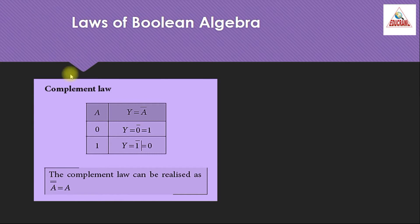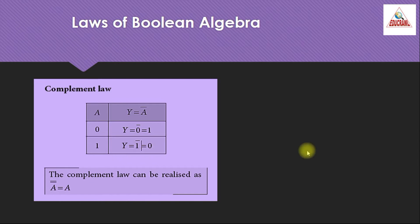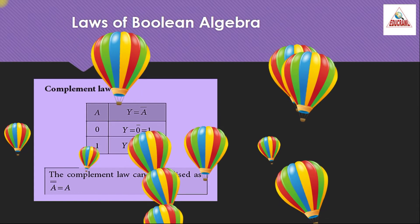First let us see about complement law. Complement law is given by y = ā, which is the complement of a. When a = 0, y = ā = complement of 0 = 1. Similarly, when a = 1, y = 1̄ = 0. So the complement law can be realized as double bar a equals a. This law is called the complement law.